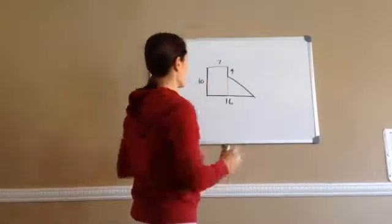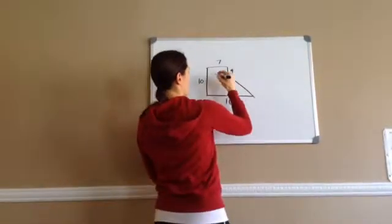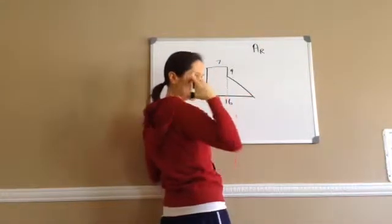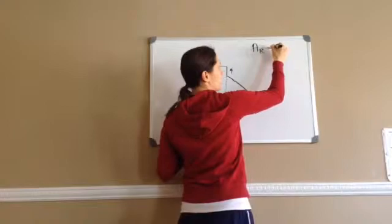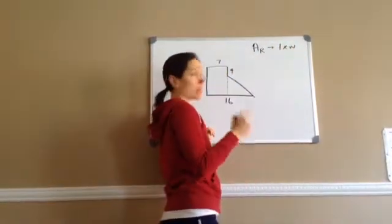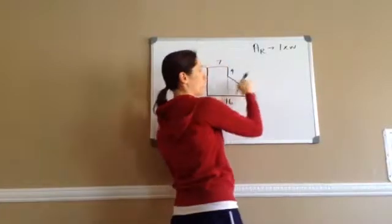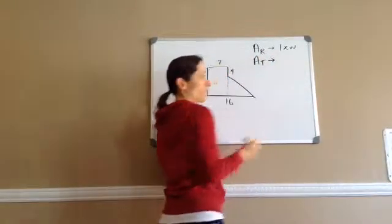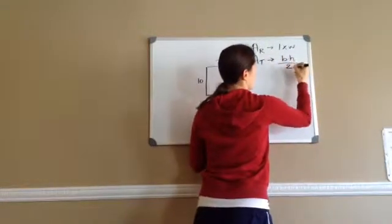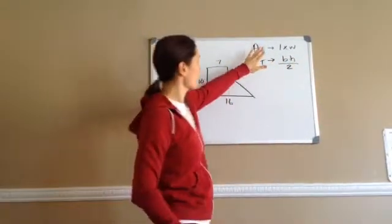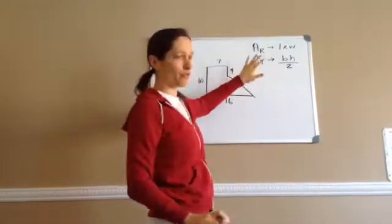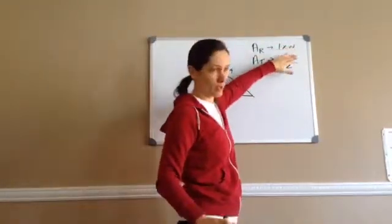You're going to find the area of the rectangle and then the area of the triangle. I'm going to put area of a rectangle — AR — that's just my symbol. The area of a rectangle is length times width. Then I'm going to find the area of a triangle, which is base times height divided by 2. It's very important to write these formulas down so I don't forget which ones I'm supposed to be doing.